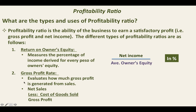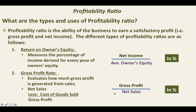The next profitability ratio is the gross profit rate, which evaluates how much gross profit is generated from sales — specifically, what percentage of net sales is gross profit. To get gross profit, you take net sales and deduct the cost of goods sold. The formula is gross profit over net sales, expressed as a percentage.